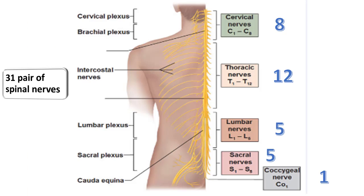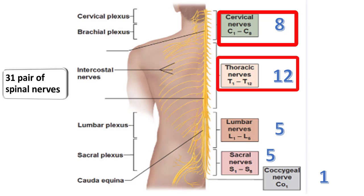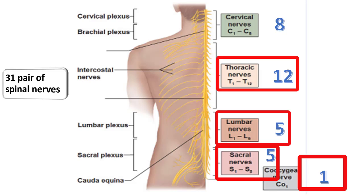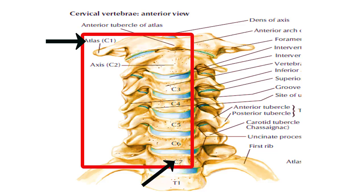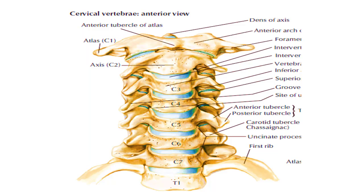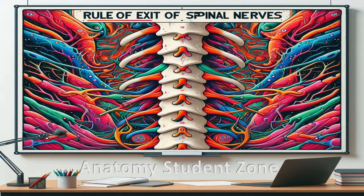There are 31 pairs of spinal nerves in our body. Among them 8 are cervical, 12 thoracic, 5 lumbar, 5 sacral, and 1 coccygeal. You might be thinking there are 7 cervical vertebrae from C1 to C7, but the spinal nerves are 8 in number. The numbering of spinal nerves relates to the vertebral column exit level. This rule explains how we number the spinal nerves, and this numbering has great clinical significance.